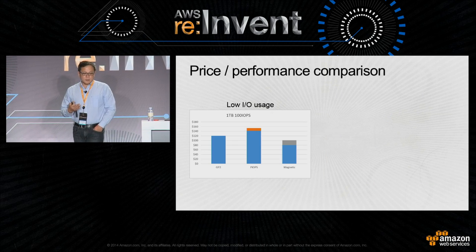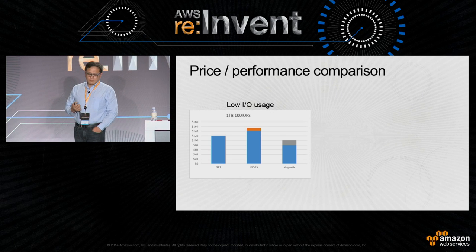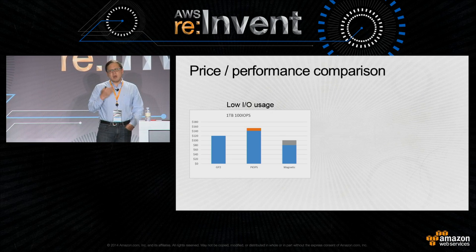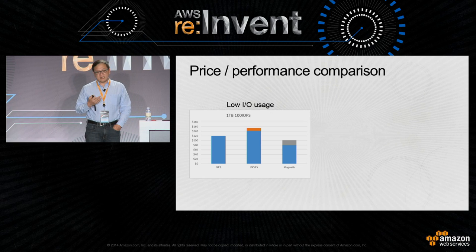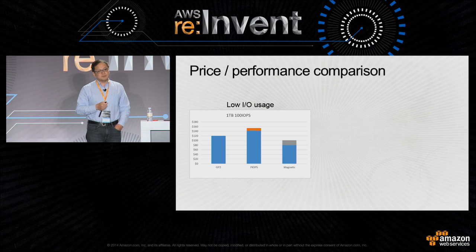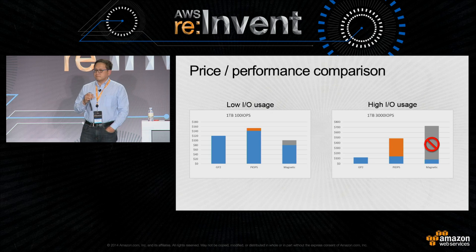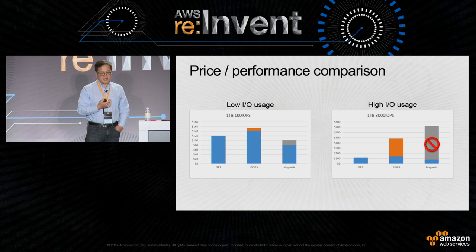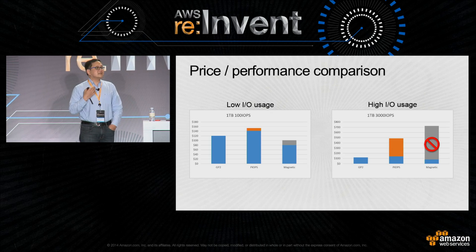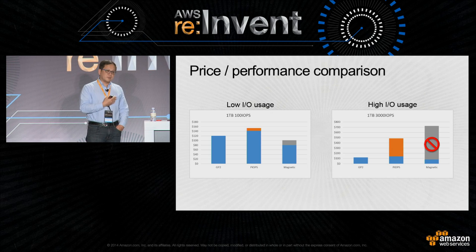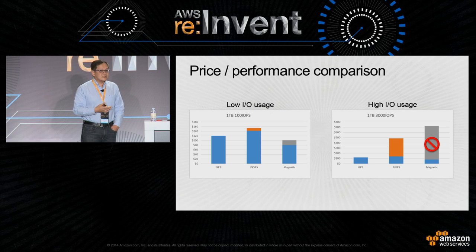In this example, in the low I/O usage scenario, GP2 is only marginally more expensive than magnetic, but GP2 can actually burst up to 3,000 IOPs per second. In the high I/O usage scenario, although provisioned IOPs can handle the workload, it is significantly more expensive — about four times more expensive than GP2. In the case of magnetic, it's not even capable of handling such a workload.